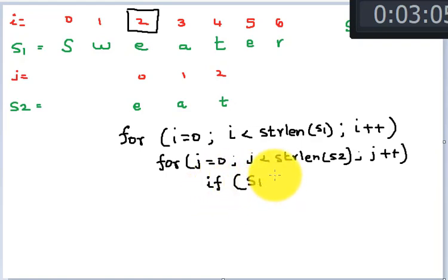If s1 at i plus j - this is a very key concept that you need to understand - is the same as s2 at j. If it's not equal to, we stop. We don't want to proceed any further. If it's not equal to, we break from the inner loop to the next index.